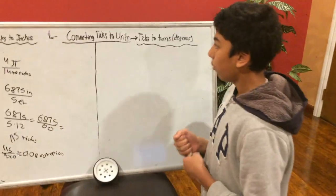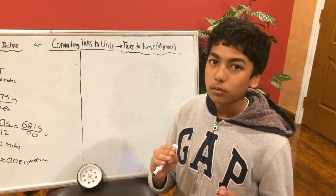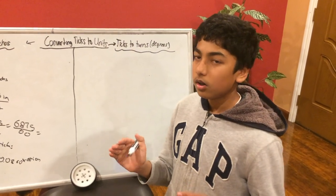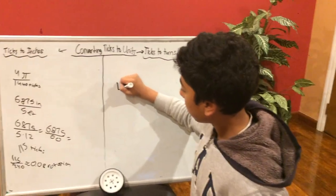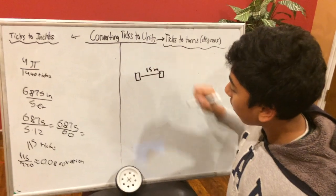First, what we do is you have to find the distance between your left wheel and your right wheel. So our wheels are 15 inches apart.